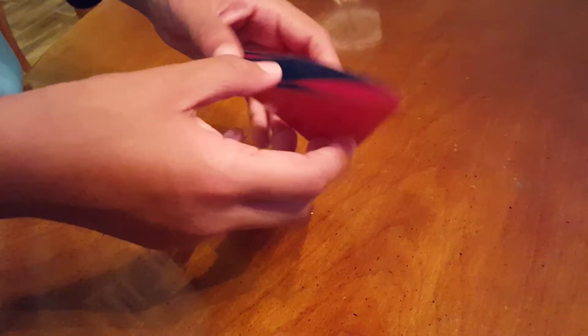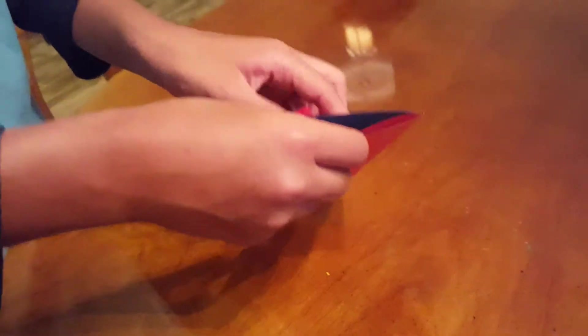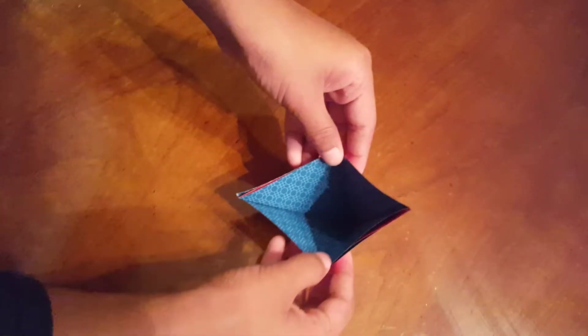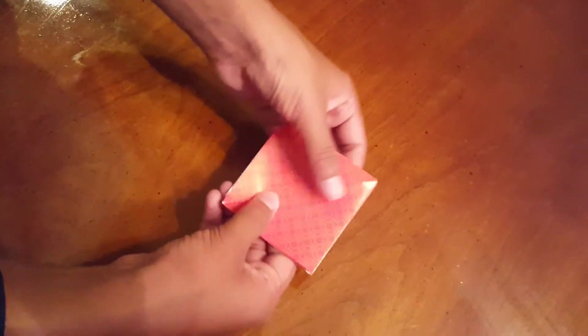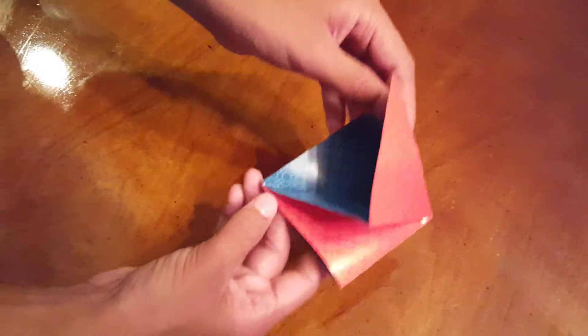Now you'll see that we have this pocket in the middle. Ignore these flaps, just keep them like here. We see this pocket here, we basically just want to open that and squash. And now you can see that we have a preliminary base.